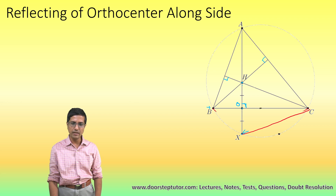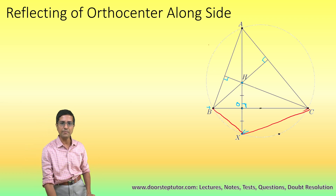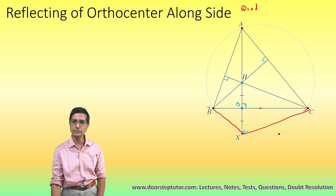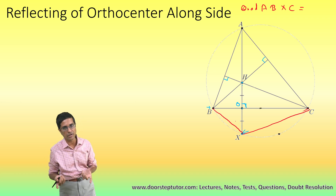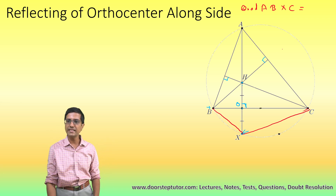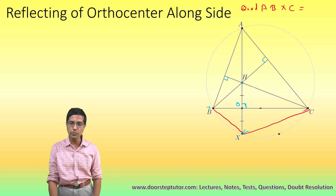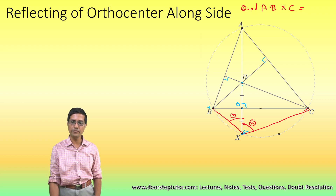We draw these lines and complete the quadrilateral ABXE. If X were to lie on the same circle, then quadrilateral ABXE becomes a cyclic quadrilateral — a quadrilateral which can be circumscribed by a circle. So ABXE is a cyclic quadrilateral if and only if this theorem holds true.